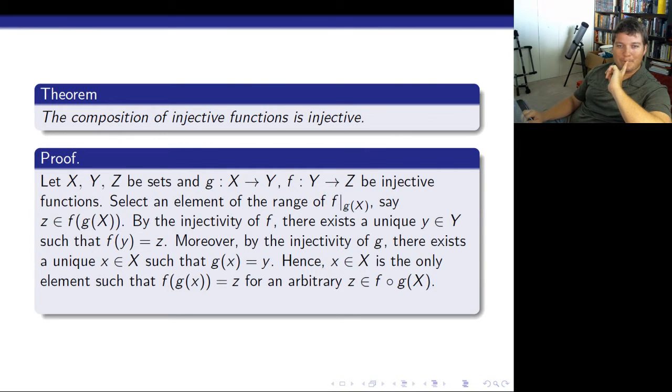So, what we've done is we've picked an arbitrary element, and we've shown it as a unique pre-image. Therefore, f of g is injective, and we are done.